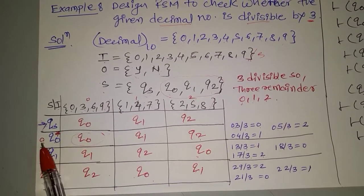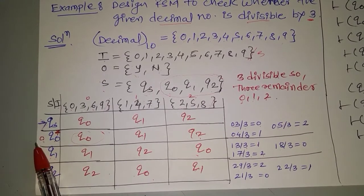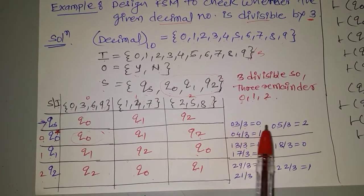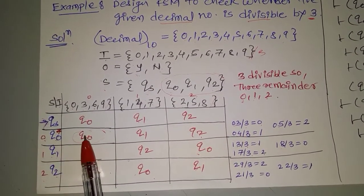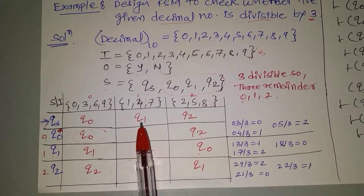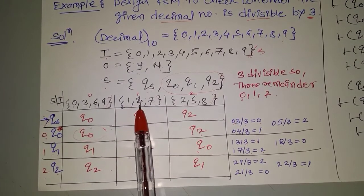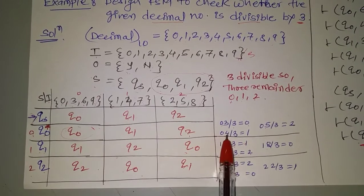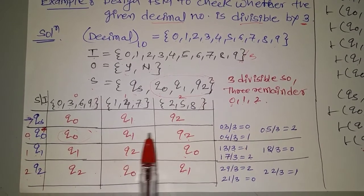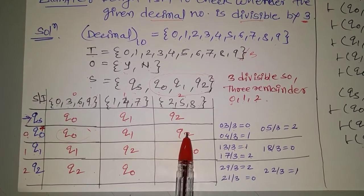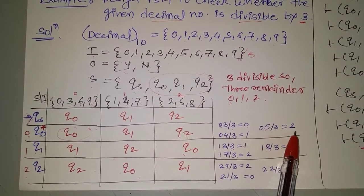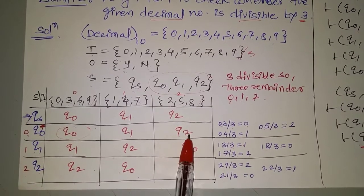In the next cell, there is one more input: 0. Take any number from the set, for example 3. So 30 divided by 3 gives remainder 0, denoted by Q0. In the next cell, take 4: 40 divided by 3 gives remainder 1, denoted by Q1. Next, take 5: 50 divided by 3 gives remainder 2, denoted by Q2.